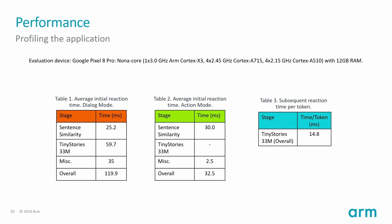We assessed our NPC performance on mobile using two metrics. First, the initial reaction time: the duration from when the NPC received the input to when it started performing an action or produced the first token in reply. This critical path includes the Tiny Stories language model and the sentence similarity model, which decides whether to perform an action or engage in dialogue. Second, the reply time — which applies only to the dialogue model — is the time it takes to generate each subsequent token of the reply, measured as time per token. The evaluation was performed on a Google Pixel 8 Pro with nine cores.